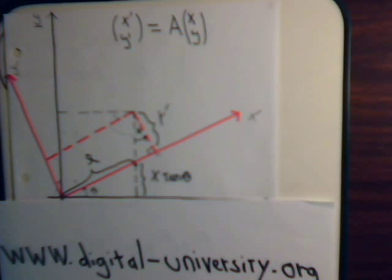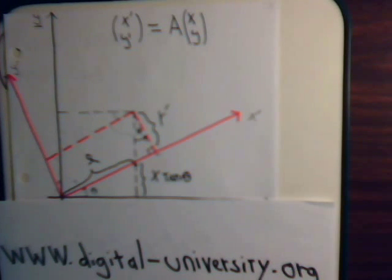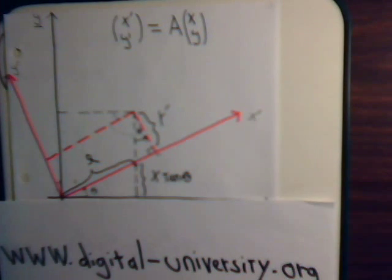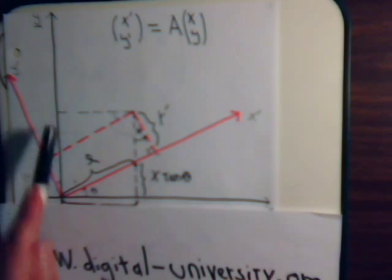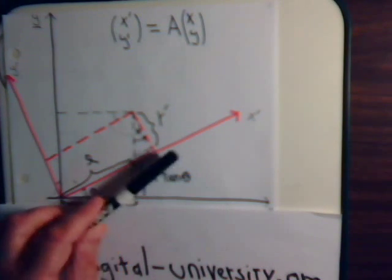We have spent the past couple of videos, starting in video 27, working with orthogonal transformations, and we've continued that discussion mainly just dealing with two-by-two matrices. So really what we're considering now is just the rotation matrix, which takes the x, y axes and tilts them.